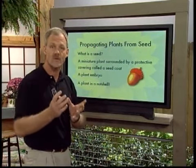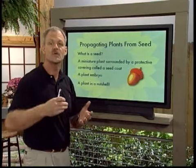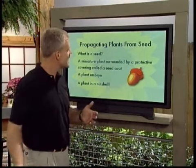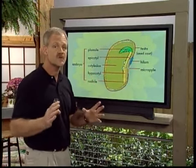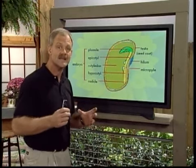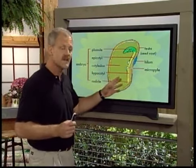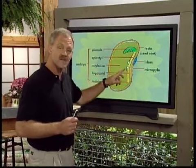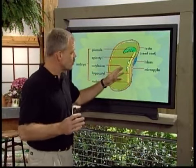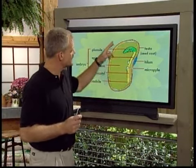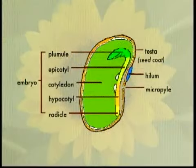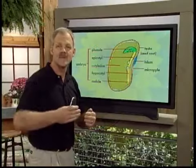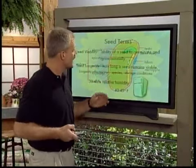Basically, you've got a whole plant surrounded by a seed coat. If you look at a diagram of a seed, you'll notice it has a shoot, it has a root — all the parts that a normal plant would have. Then it's supported by a larger area called the cotyledon, which is nothing more than stored food that feeds the young plant when it begins to germinate in the soil.